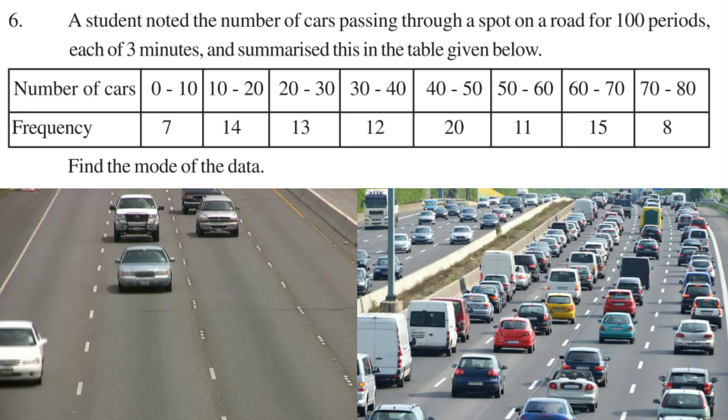They have given number of cars: 0 to 10, 10 to 20, up to 70 to 80, and the frequency: 7, 14, 13, 12, 20, 11, 15, 8. They are saying to find mode, mode of the given data.